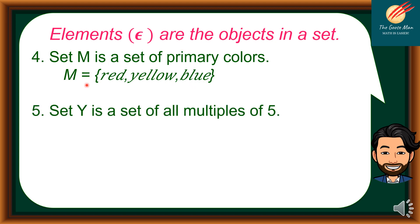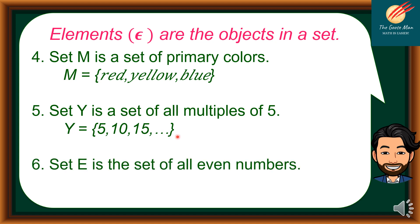Another example: set Y is the set of all multiples of 5. If we write down the elements of set Y, we can start with 5, 10, 15, and so on and so forth. We use ellipsis to signify there is an infinite number of elements. Set E is the set of all even numbers, so E = {2, 4, 6, ...} and so on and so forth.